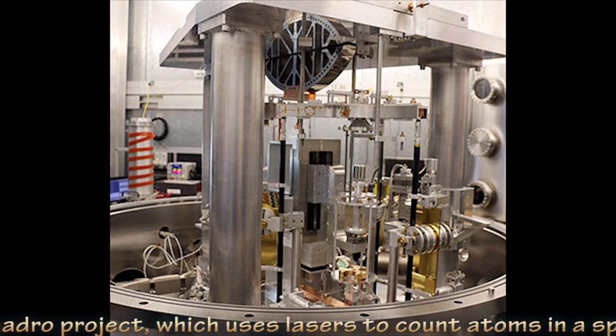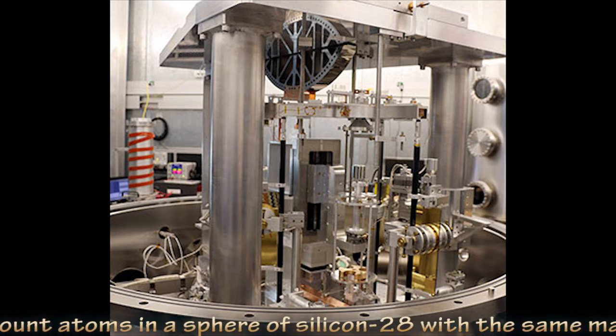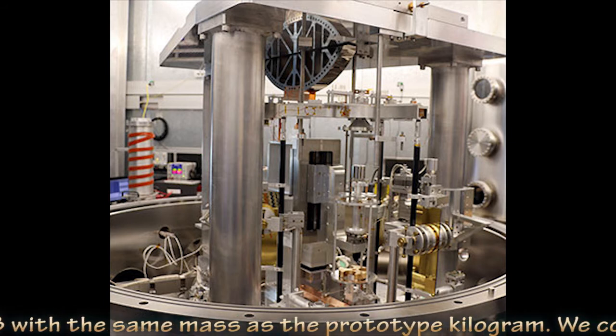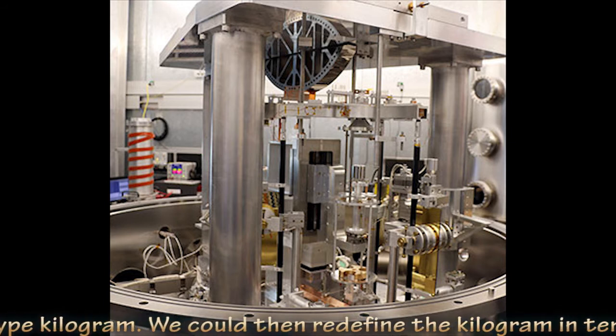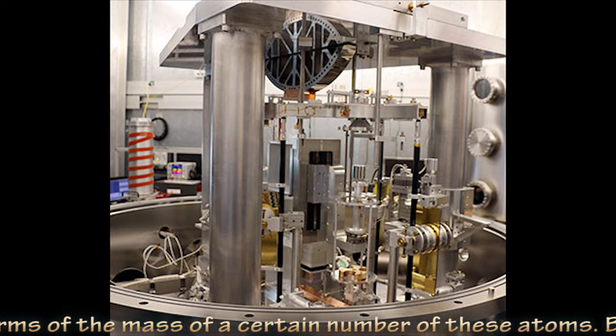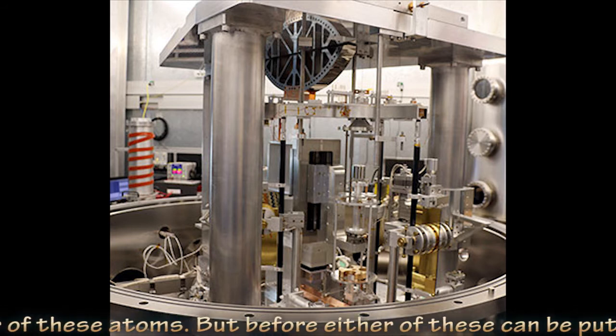Alternatively, there's the Avogadro project, which uses lasers to count atoms in a sphere of silicon-28 with the same mass as the prototype kilogram. We could then redefine the kilogram in terms of the mass of a certain number of these atoms.